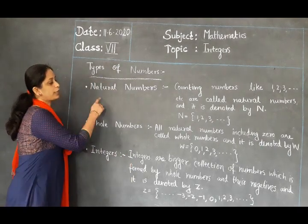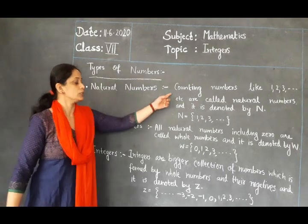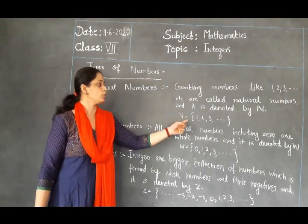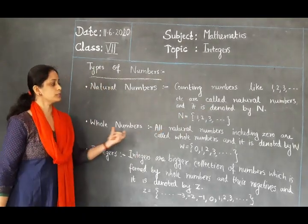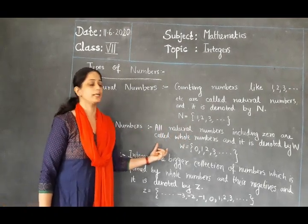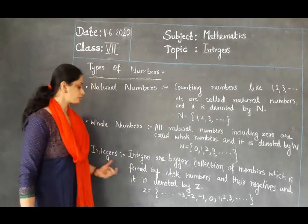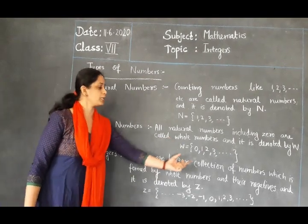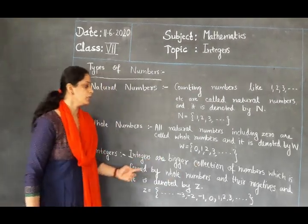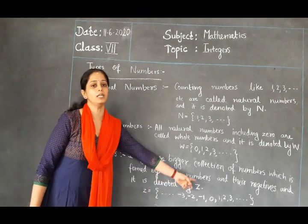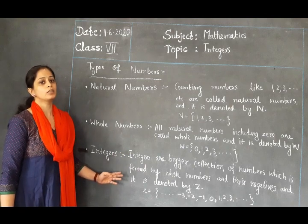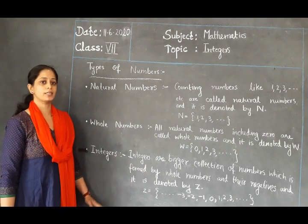To summarize: natural numbers are counting numbers denoted by capital N — N equals 1, 2, 3, etc. All natural numbers including 0 are called whole numbers, denoted by capital W. Integers are a bigger collection of numbers formed by whole numbers and their negatives, denoted by capital Z. We will learn more about integers in this lesson. Let us continue in the next class. Thank you.